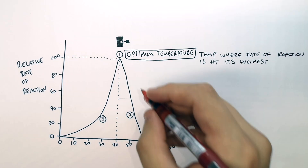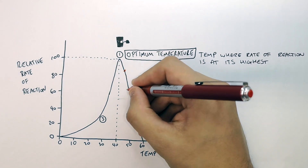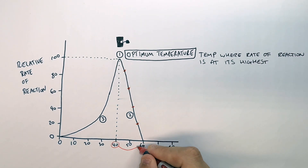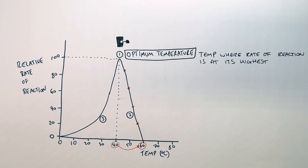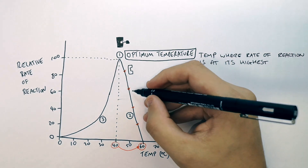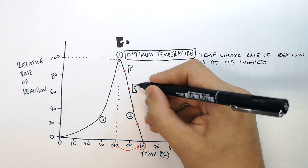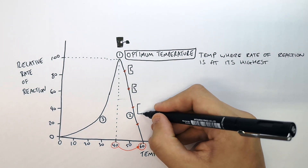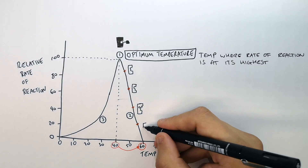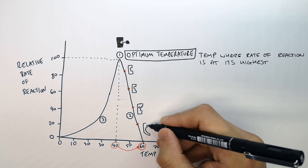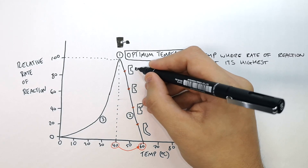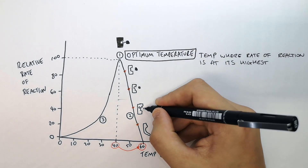But why does the rate of reaction decrease above the optimum temperature? From 40 to 60 the rate decreases. This is because above the optimum temperature, the active site of the enzyme is changing shape. The higher the temperature, the more the active site changes shape and denatures. If the enzyme's active site denatures, the substrate can no longer bind the active site and less product is made.